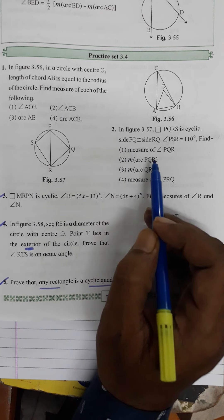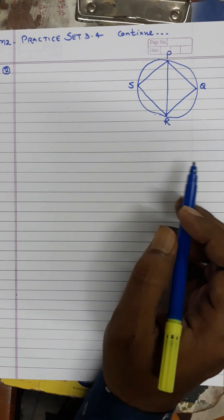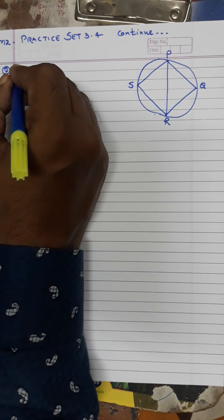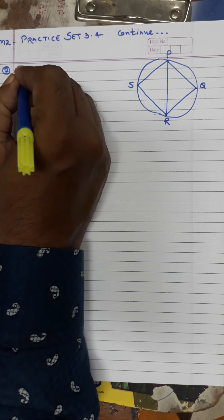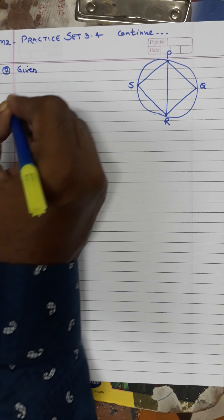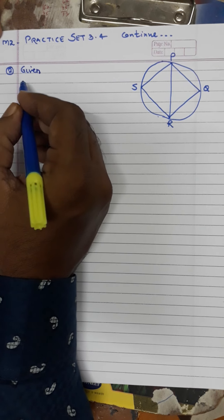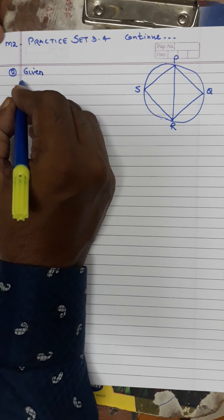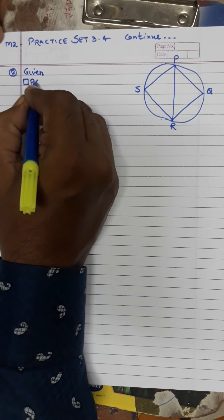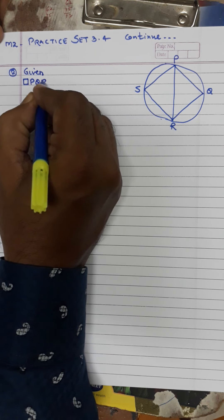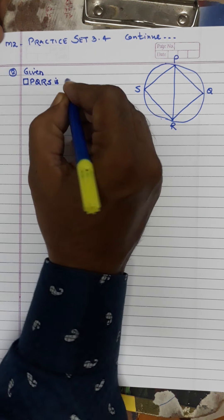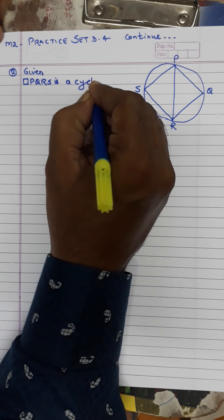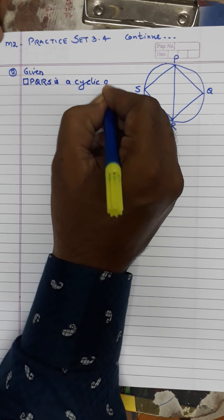Let's write what we have in the given. In the given, PQRS is a cyclic quadrilateral.